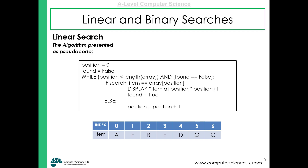Here is the linear search algorithm in pseudocode. We start at index 0, so position is set to 0. We have a flag variable set to false to indicate we haven't yet found the item. We then have a while loop where the condition is that whilst the position is less than the length of the array — in other words, whilst we're not at the end of the array — and whilst the found flag is false, meaning we haven't found the item yet.